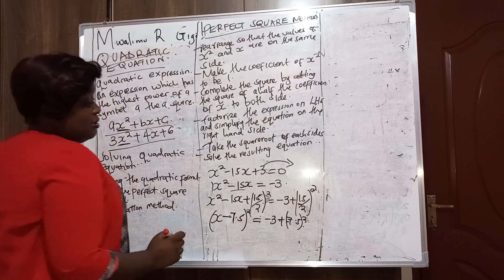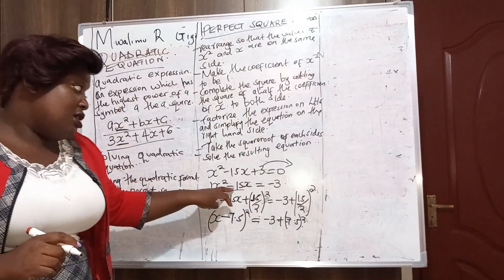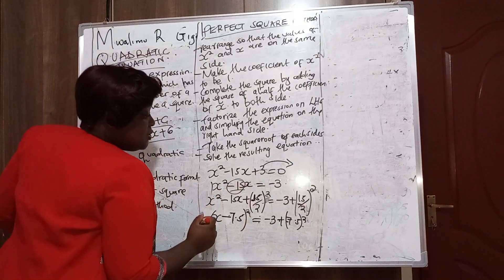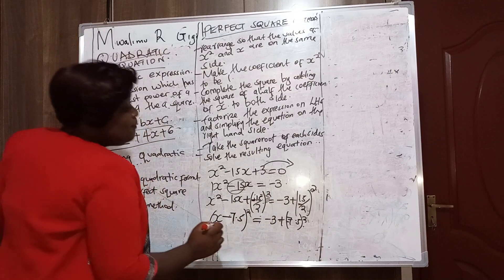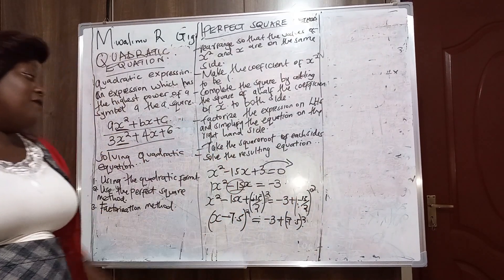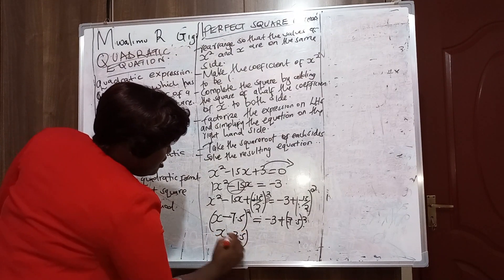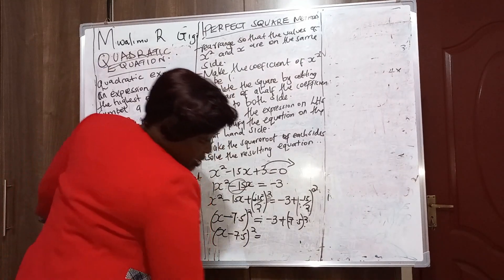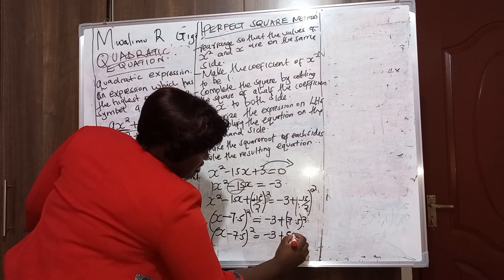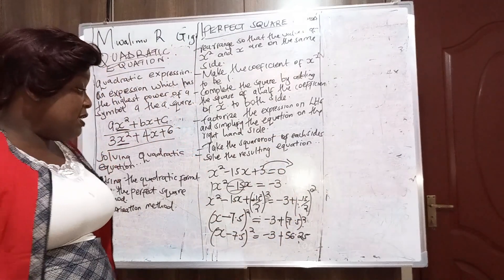So here it will be (x − 7.5)² = −3 + 56.25. Since (−7.5)² is positive 56.25, we have (x − 7.5)² = −3 + 56.25 = 53.25.